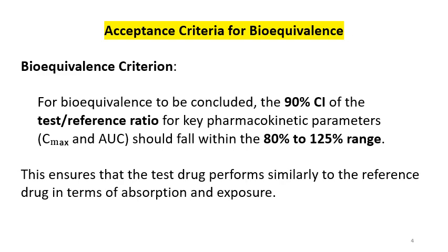90% CI ensures that the test drug performs similarly to the reference drug in terms of absorption and exposure. This is because it measures Cmax and AUC — Cmax refers to the rate of absorption and AUC refers to the extent of absorption.